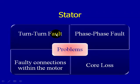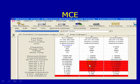Another thing that could cause a turn-to-turn or phase-to-phase fault is possibly high vibration, where it rubs away at the insulation. Also consider the rotor fault zone — if you have an anomaly in the rotor, it could be creating high heat, and since the rotor is very close to the stator, that excess heat could degrade the stator insulation. Faulty connections within the motor include dead or faulty solder connections. Core loss, or loss of core lamination, also generates excess heat that could destroy insulation over time and cause a potential fault inside the stator.